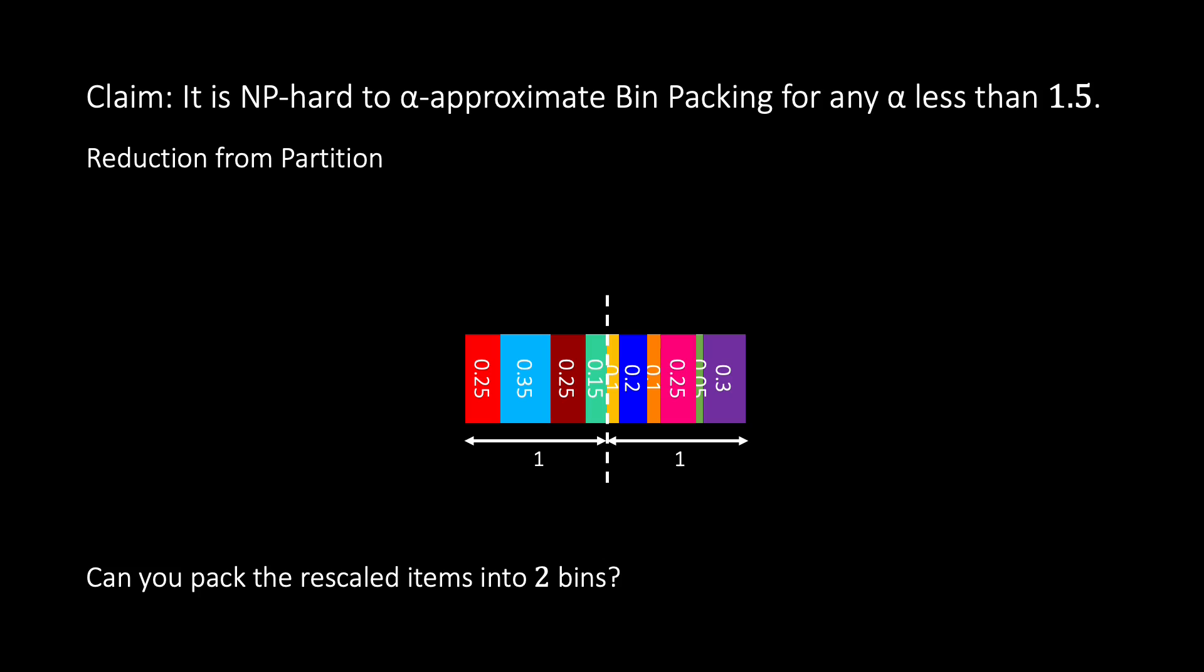However, if there is no solution to the partition problem, then we will need at least three bins. Therefore, if we had a 1.49 approximation algorithm for bin packing, then it could also be used to decide whether there is a partition of any N items. But as we know, partition is NP-hard, and therefore, so is approximating bin packing to a factor below 1.5.